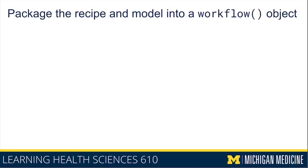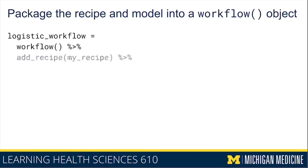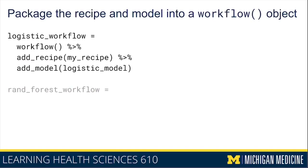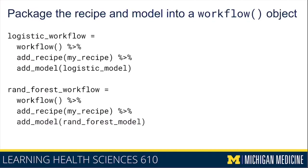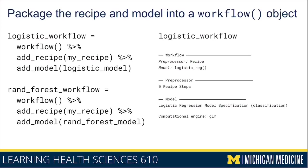Now that we've defined our recipe and model, we need to package those into a workflow object. For a logistic regression model, the workflow object starts with the workflow function, piped to add_recipe with myRecipe, and then add_model with logistic_model. I can do something similar for random forest using the same recipe but the random forest model. If I take a closer look at logistic_model_workflow, you can see the preprocessor is recipe, the model is a logistic regression model with no recipe steps yet since I haven't done any preprocessing, and the model is using the GLM engine.